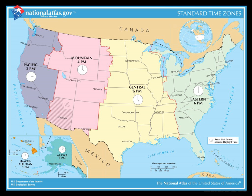Daylight saving time was established by the Standard Time Act of 1918. The act was intended to save electricity for seven months of the year. During World War I, DST was repealed in 1919 over a presidential veto, but standard time in time zones remained in law, with the Interstate Commerce Commission having the authority over time zone boundaries.